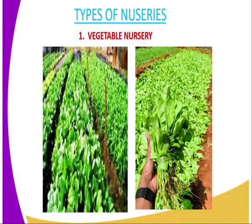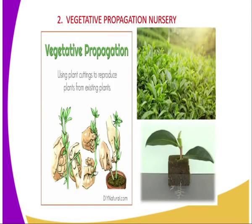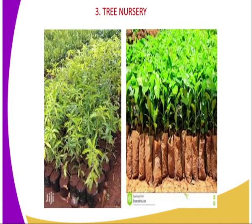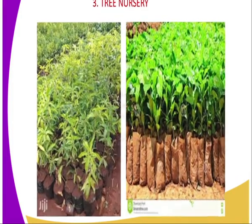Then we have types of nursery. We have three types of nursery. First, we have vegetable nursery, which is used to raise vegetable seedlings. Then we have vegetative propagation nursery, which is used to raise vegetative crops with a woody stem, for example tea and coffee cuttings. Then we have tree nursery, which is used for raising tree seedlings.